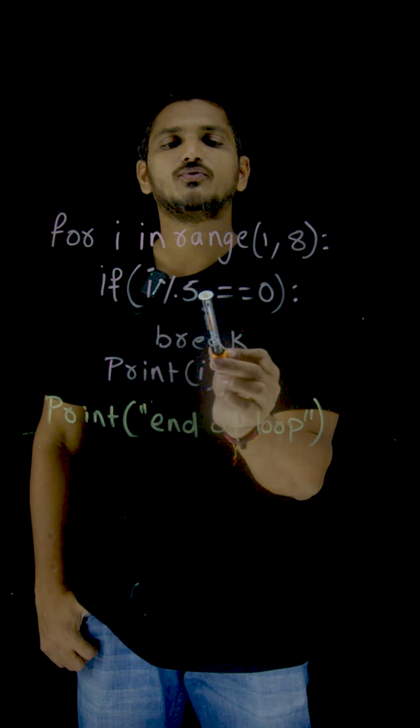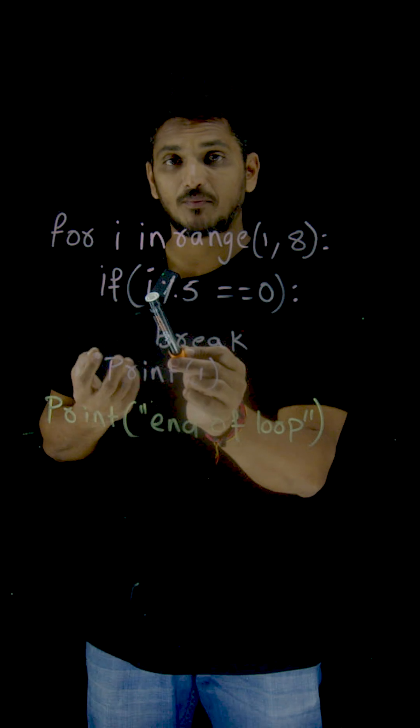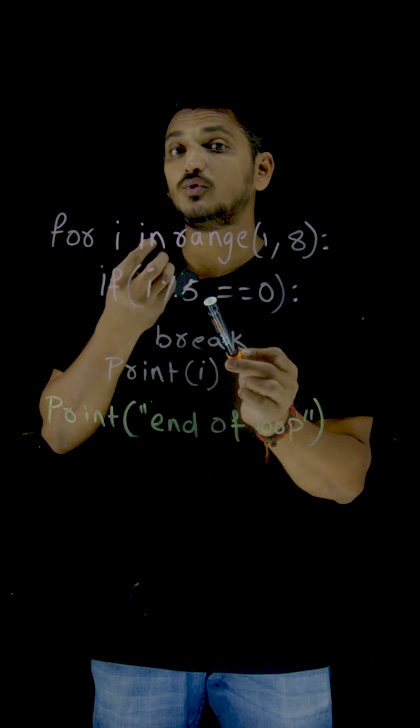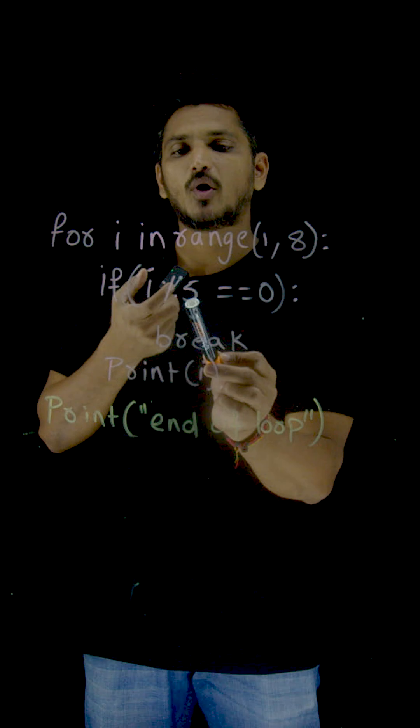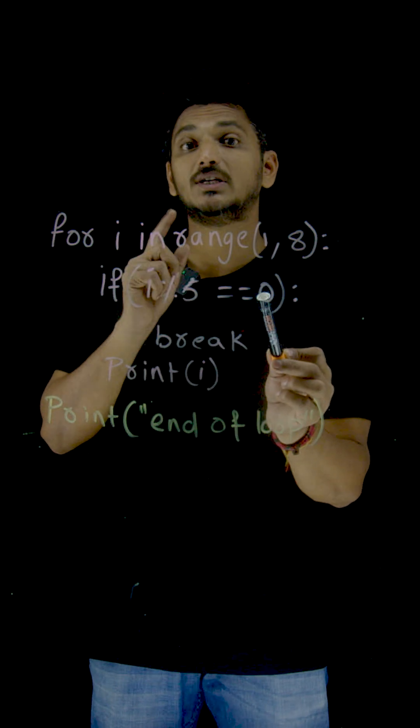If i modulus 5 equal to 0, means i is a number. If it is divisible by 5, modulus 5 means it is going to give you remainder value. If i mod 5 is 0, 0 equal to 0, true. Otherwise, it is false.